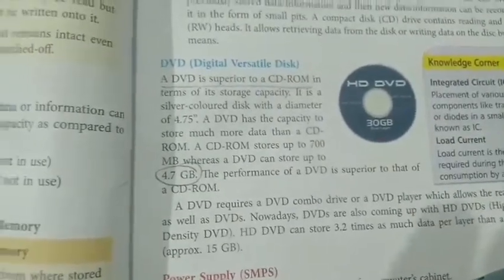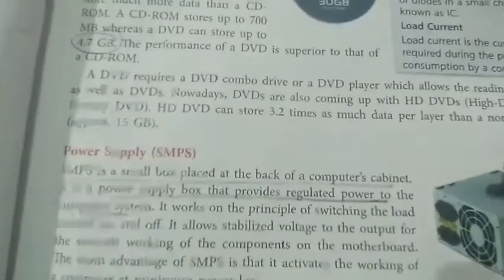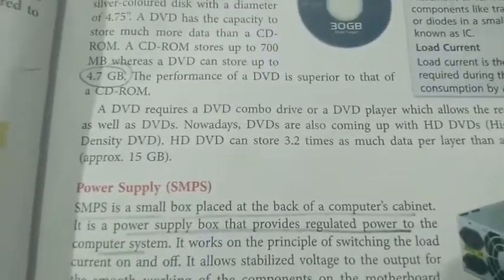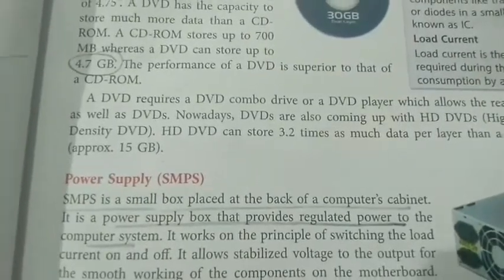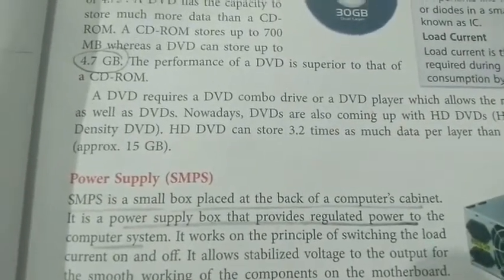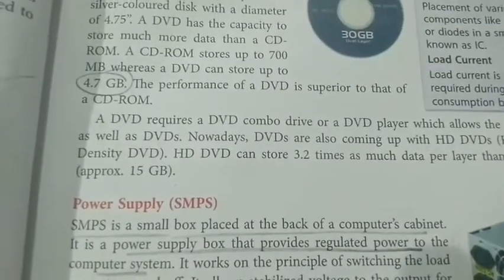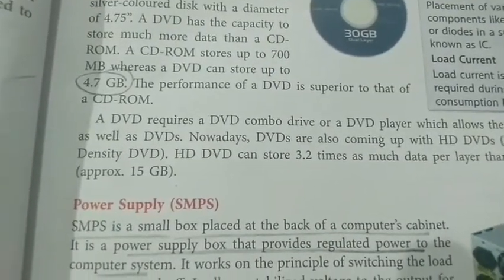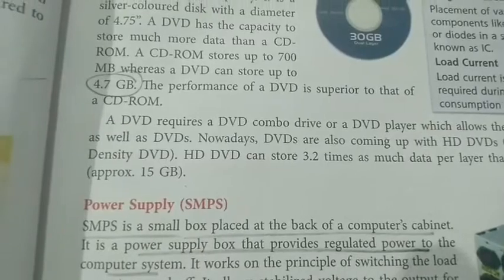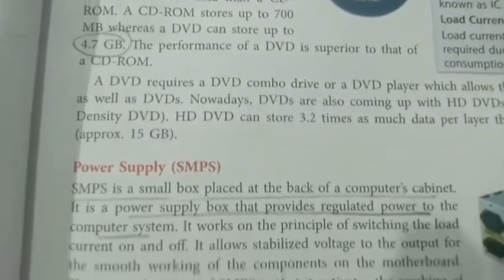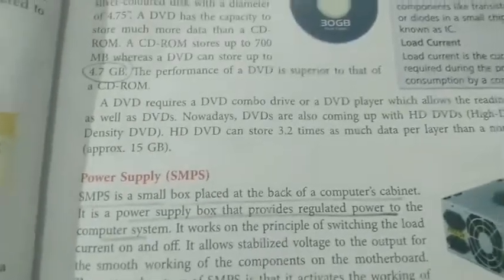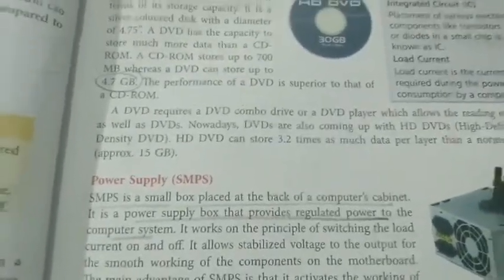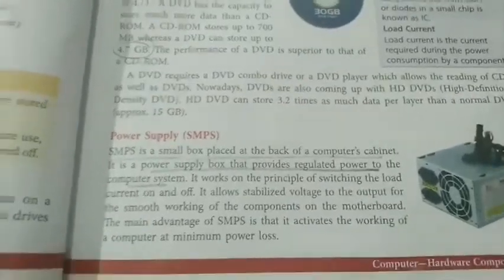Next is the power supply, or SMPS. This is the small box found at the back of the CPU where the black wire from the electricity board is directly connected. It acts like an amplifier, lowering 240 volts down to 5 or 6 volts for various devices to operate.